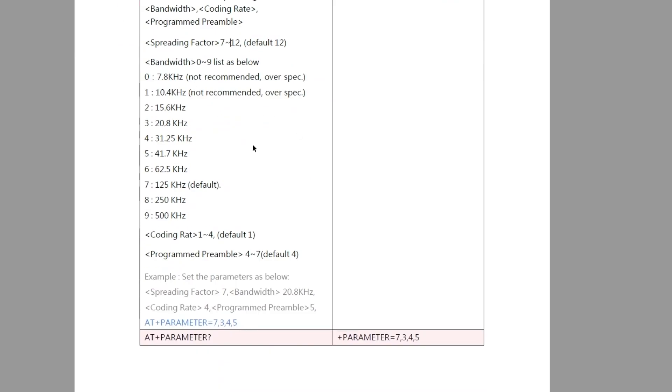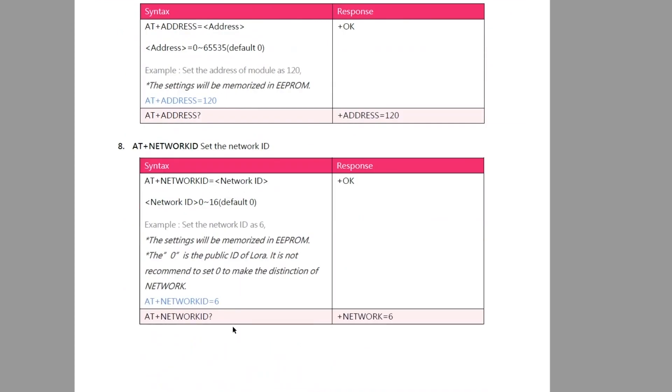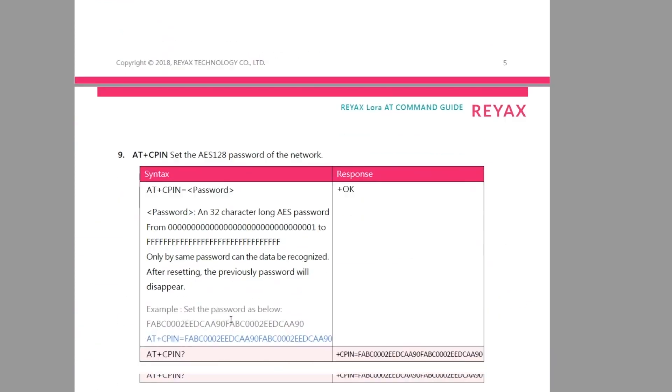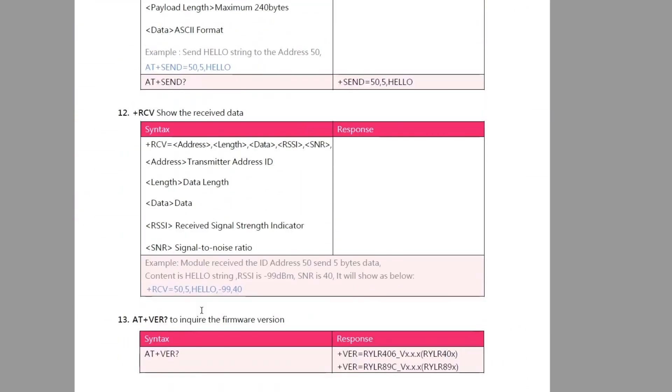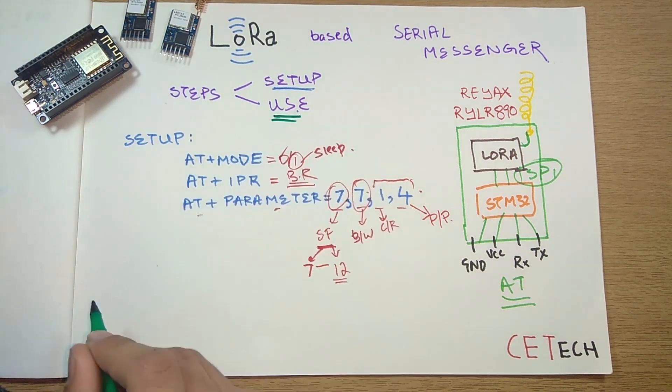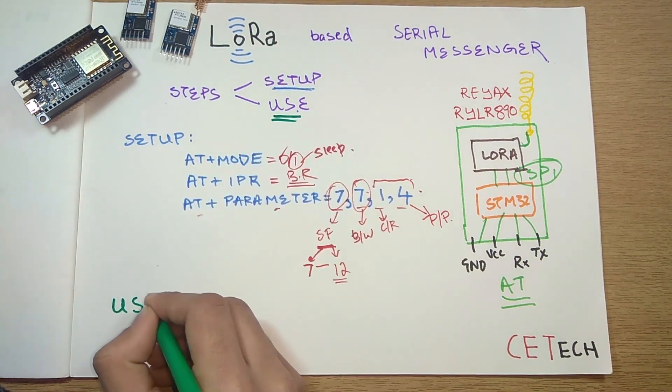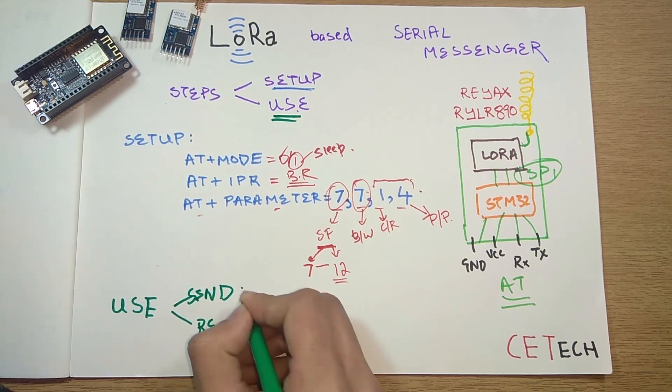There are some other setup commands as well, like AT+BAND, AT+ADDRESS, AT+NETWORK ID, AT+CPIN, and some others. I'll mention the entire AT guide in the description, so you can check that out. I recommend doing that.